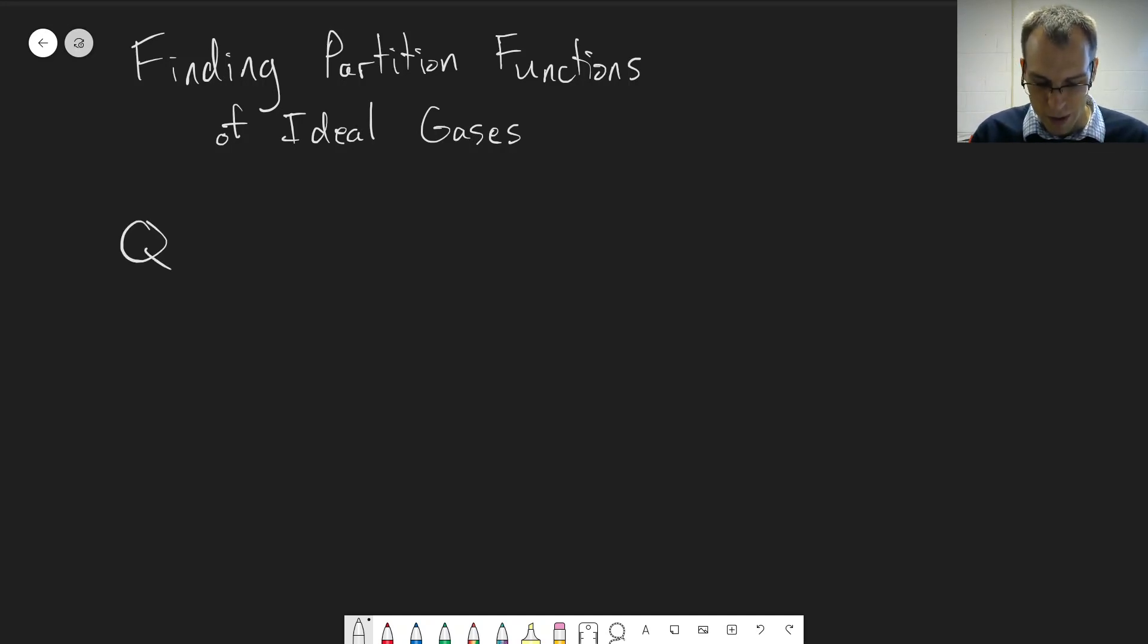So just to recap from our previous chapter and video, if we want to find the system partition function, we want to find the molecular or atomic partition function, raise that to the N divided by N factorial to get what we need for the system.